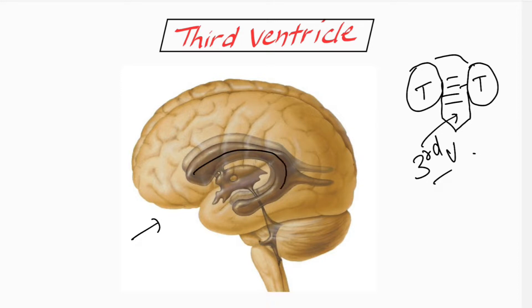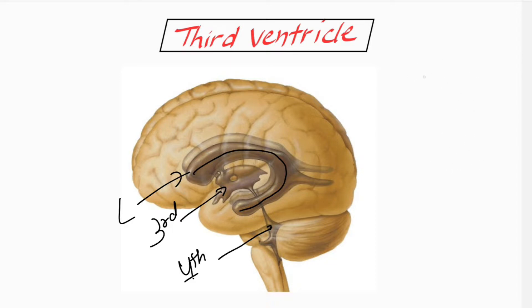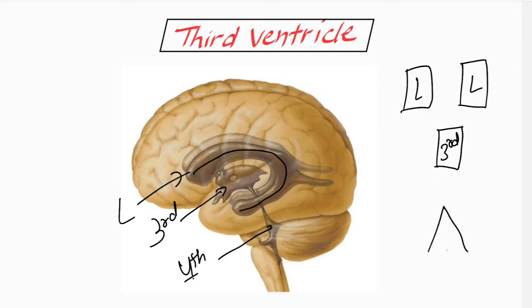Looking from the lateral side, the C-shaped ventricle on the upper side is the lateral ventricle, below that is the third ventricle, and anterior to the cerebellum we have the fourth ventricle. All these ventricles are connected by foramina or aqueducts. The two lateral ventricles communicate with the third ventricle, and the third ventricle communicates with the fourth ventricle.